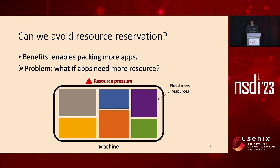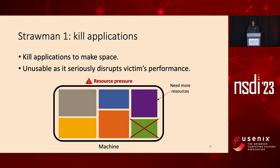However, to make this bold design work, there is a key problem that remains to be solved. If the purple application's load increases and requires more resources, what should we do? It is challenging because at that point there is no idle resource in the machine. One strong approach is to queue applications to make space — for example, picking the green application as the victim. Unfortunately, this doesn't work as it seriously disrupts the green application's performance.